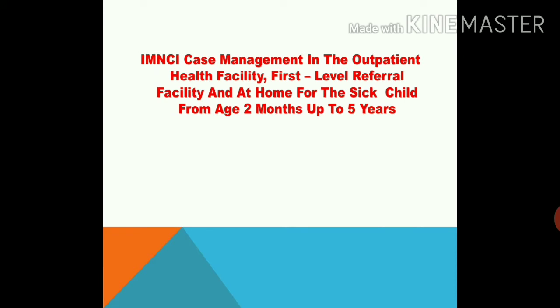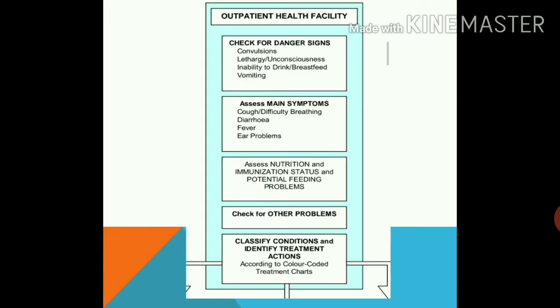Now we will discuss case management in the outpatient health facility, first-level referral facility, and at home for the sick child from age 2 months to 5 years. The case management process for this age group checks for general danger signs and possible serious bacterial infection. General danger signs include convulsions, lethargic or unconscious state, inability to drink or breastfeed, and vomiting.